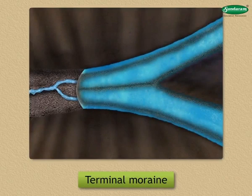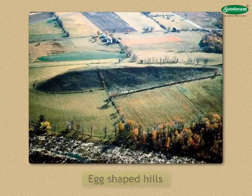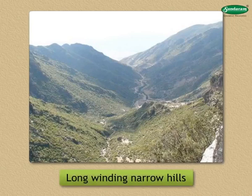Second, Drumlins: huge heaps of ground moraines deposited in the form of egg-shaped hills are called drumlins. This feature is found in Northern Ireland and North European Plains. Eskers: at times, the moraine gets deposited in the form of long, winding, narrow hills with steep slopes. These are called eskers.